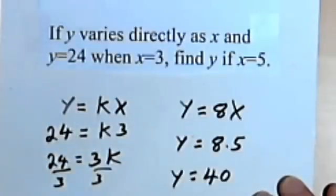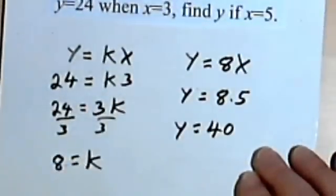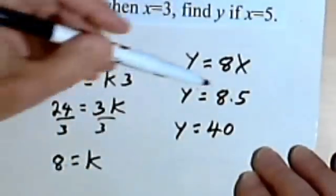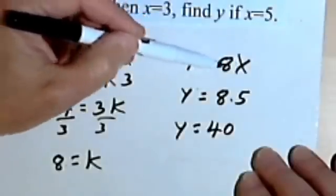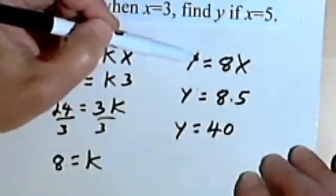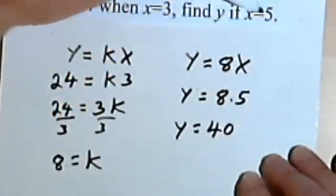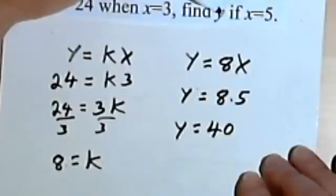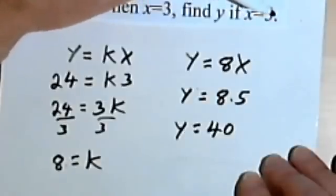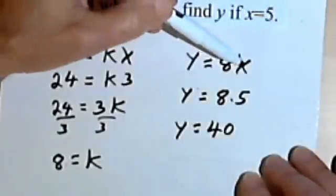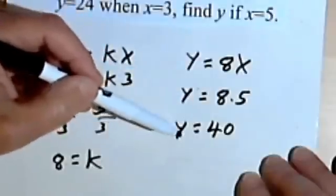Once you've got this k, this constant of variation, then all you're going to do is rewrite the general formula as a specific formula, and find the answer to the question they're asking you. They're saying what is y when x is 5. So you'll plug 5 in for x and get your answer.